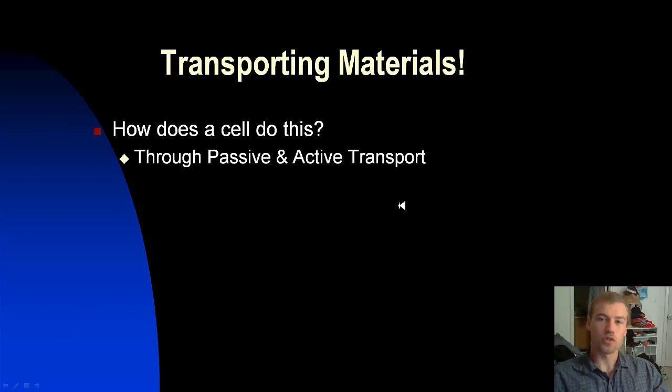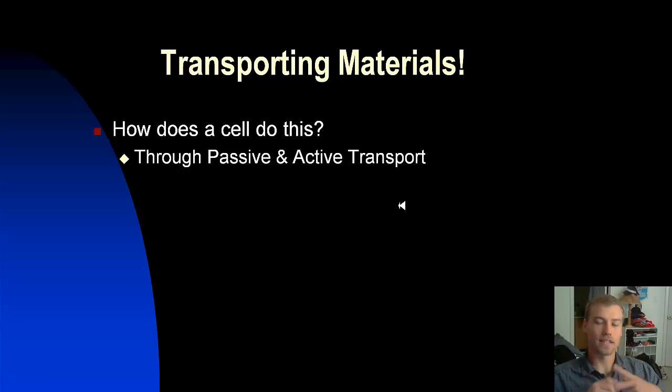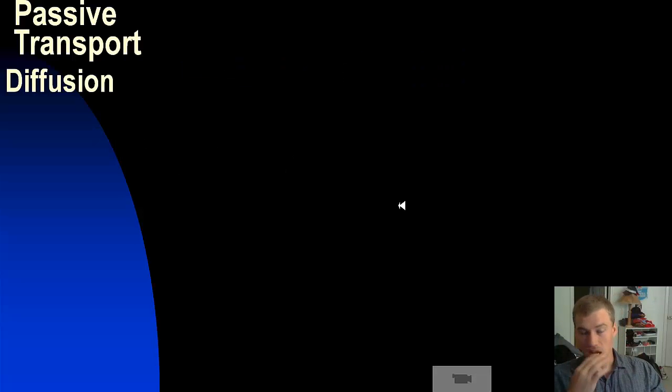So, transporting materials — how does a cell do this? We have two processes called active and passive transport. We're going to talk about passive transport first.